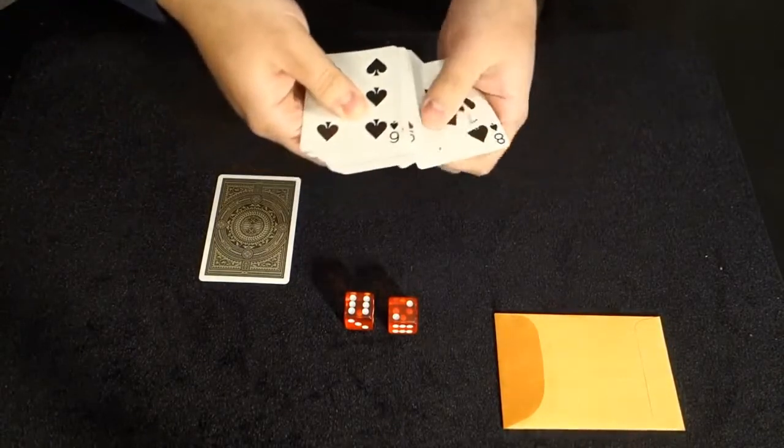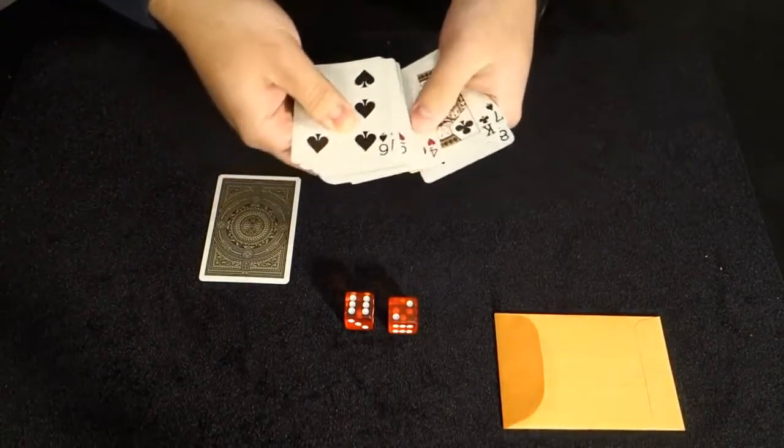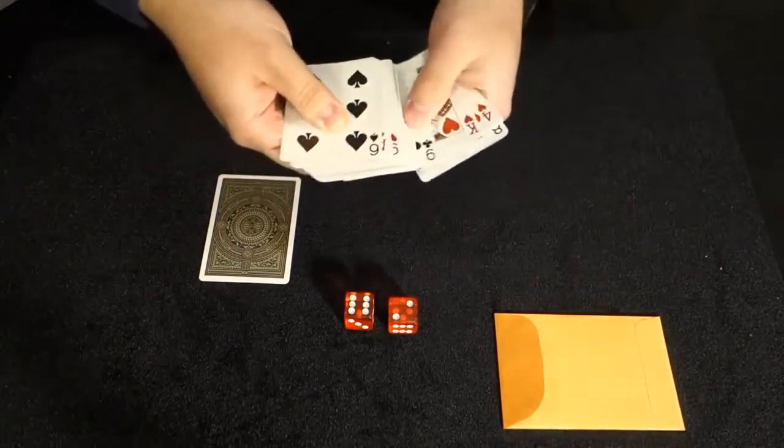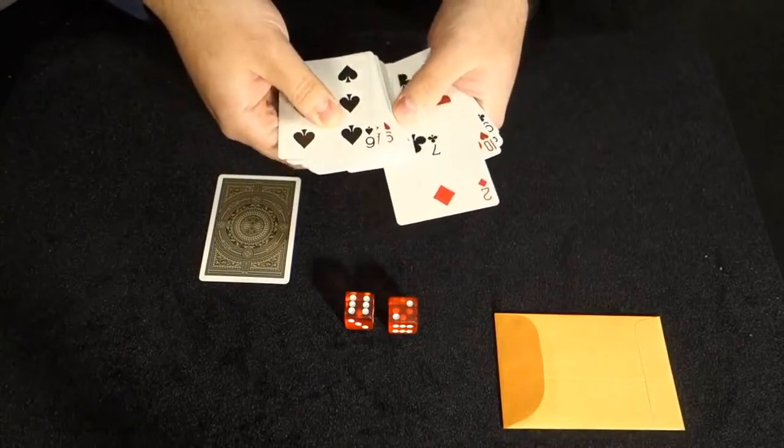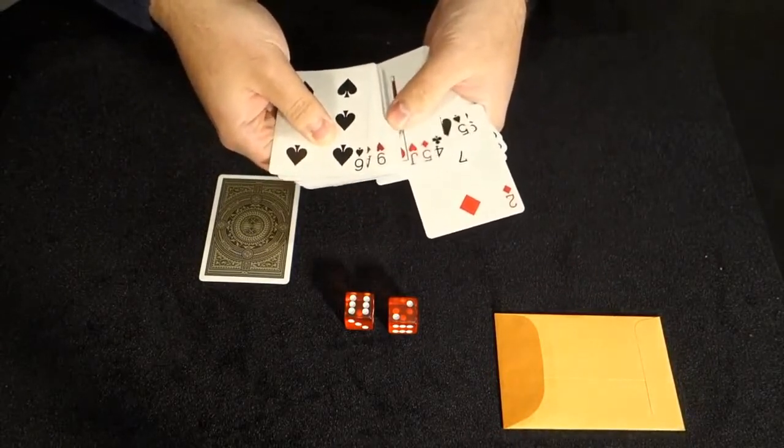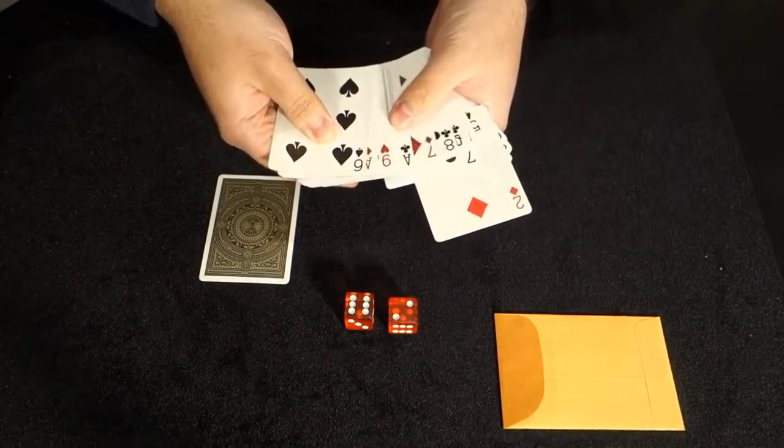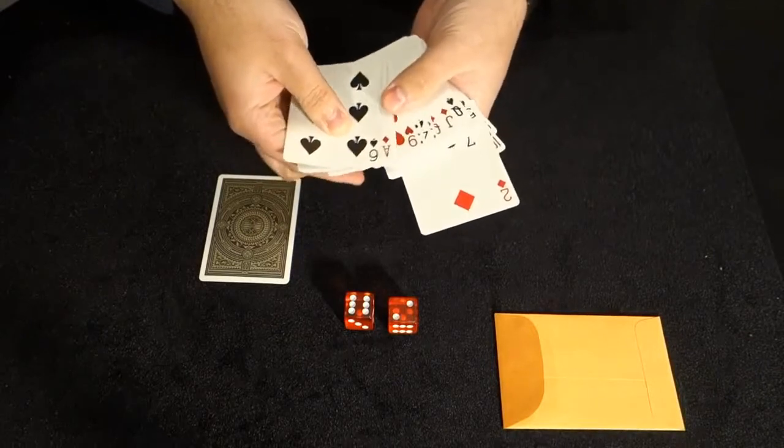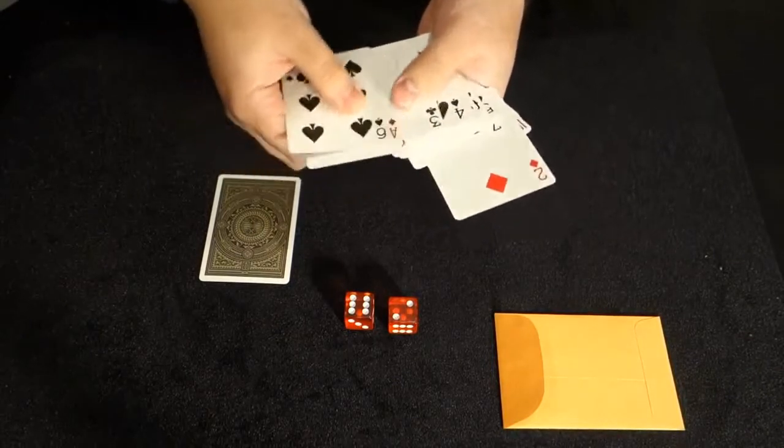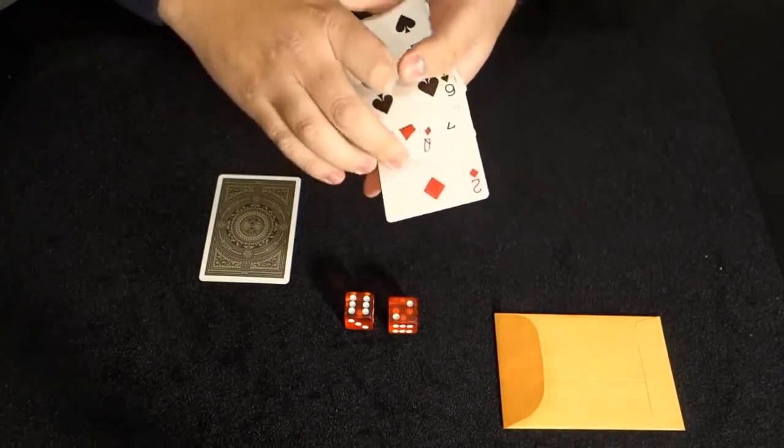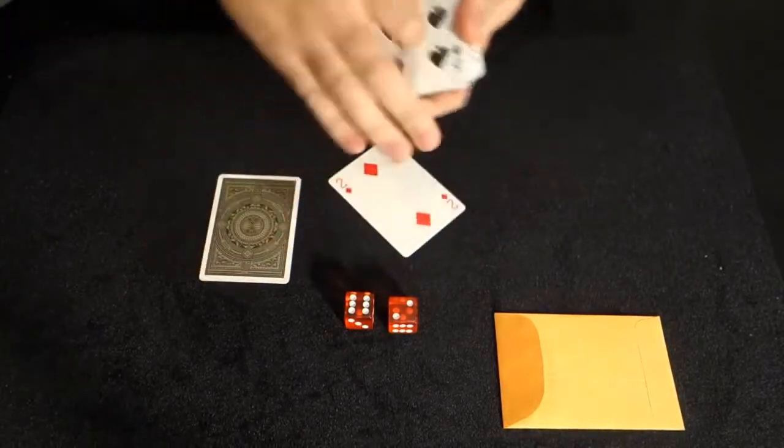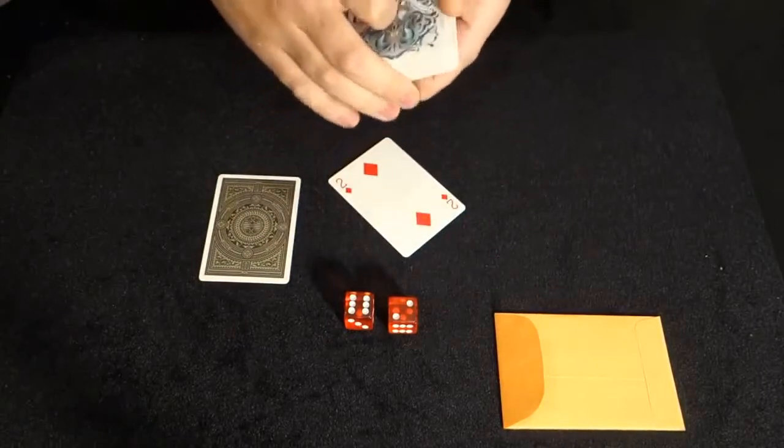So, that'd be one, two, three, four, five, six, seven, eight. The two of diamonds. And again, you can confirm there is no other two of diamonds in the deck. So, had you set top, it would have been one, two, three, four, five, six, seven. The queen of diamonds. Total different card. But today, we ended up on the two of diamonds.